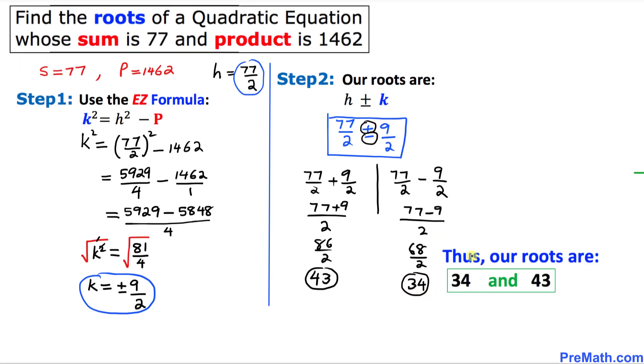So thus our roots turn out to be 34 and 43, and if we multiply them we are going to get 1462, and if we add them we are going to get 77.